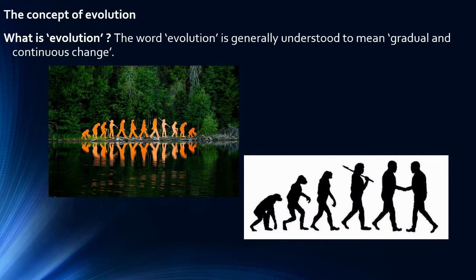The concept of evolution. Student, what is evolution? Let's see. The word evolution is generally understood to mean gradual and continuous changes. Evolution also defines as descent with modification, meaning these species change over time to time, give rise to new species and share a common ancestor.